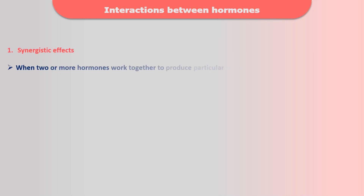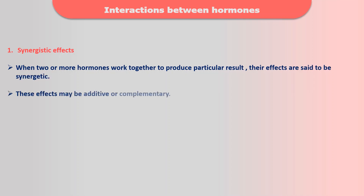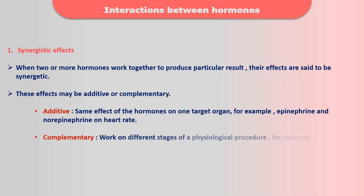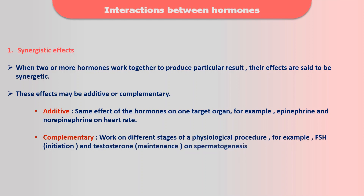Interactions between hormones may lead to synergistic, permissive, or antagonistic effects. When two or more hormones work together to produce a particular result, their effect is said to be synergistic, and they are of two types: additive and complementary. The same effect of hormones on one target organ is called additive — for example, epinephrine and norepinephrine on heart rate. When they work on different stages of a physiological process, it is called complementary — for example, FSH and testosterone on spermatogenesis.